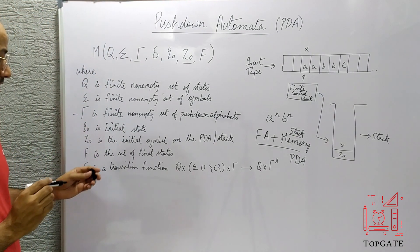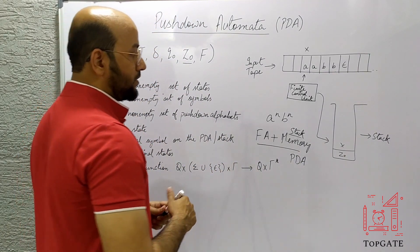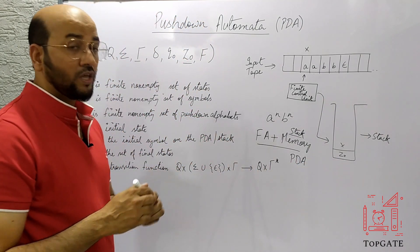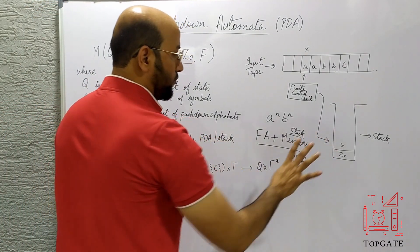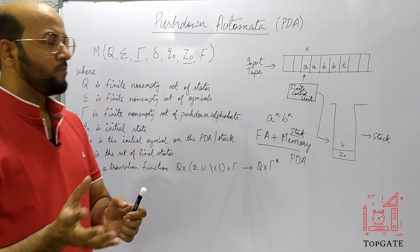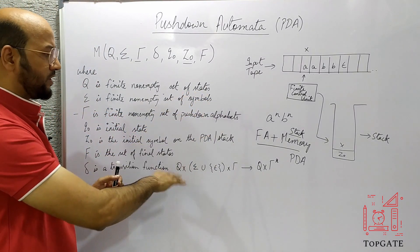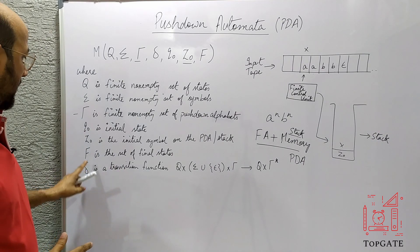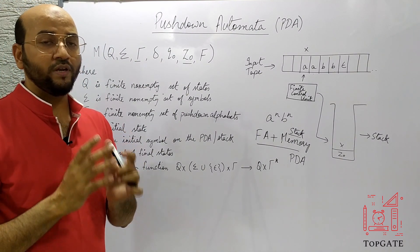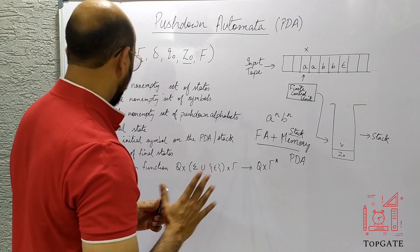Then there is Z naught, which is the initial symbol on the stack. When the stack is actually empty, Z naught represents that state. So whenever we are reading a string, Z naught tells us that the stack is now empty. As soon as we reach Z naught, we are sure that the stack has been emptied and the whole string has been read. Z naught tells us the stack is completely empty.